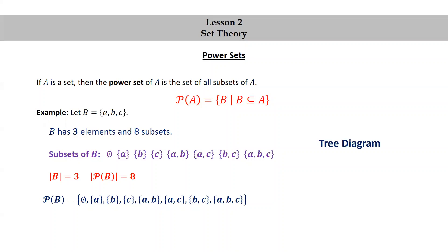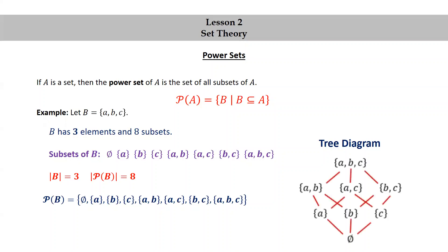Let's look at a tree diagram for the subsets of capital B. We have the only subset of cardinality three at the top, set abc. Then we have three subsets of cardinality two, three subsets of cardinality one, and then the only subset of cardinality zero, the empty set. You can see all the line segments showing the relationships between various sets. You could also trace various paths to get additional subsets using what's called the transitivity of the subset relation.